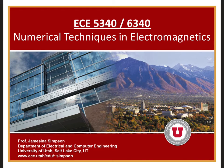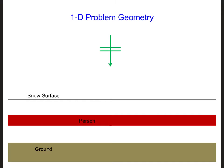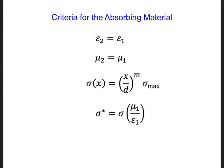Last time we developed an absorbing material for the side of the grid that points upward towards the sky. We want this absorbing material to absorb any upward propagating waves so that the grid looks infinitely long in that direction. Here is a list of the conditions that must be met in order for this absorbing layer to work.